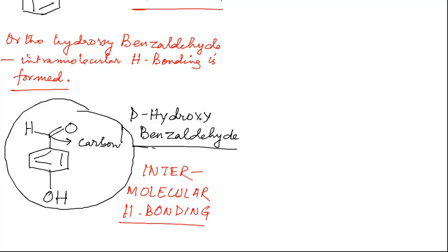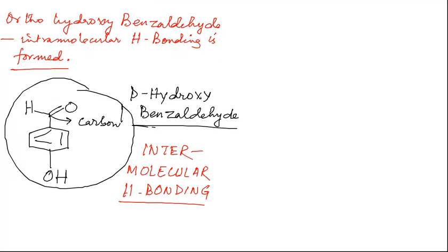So if we wish to discuss the nature of the Hydrogen bonding between two molecules, we can see that in Ortho-Hydroxybenzaldehyde there is formation of Intra-molecular Hydrogen bond, and in Para-Hydroxybenzaldehyde there is formation of Inter-molecular Hydrogen bond.